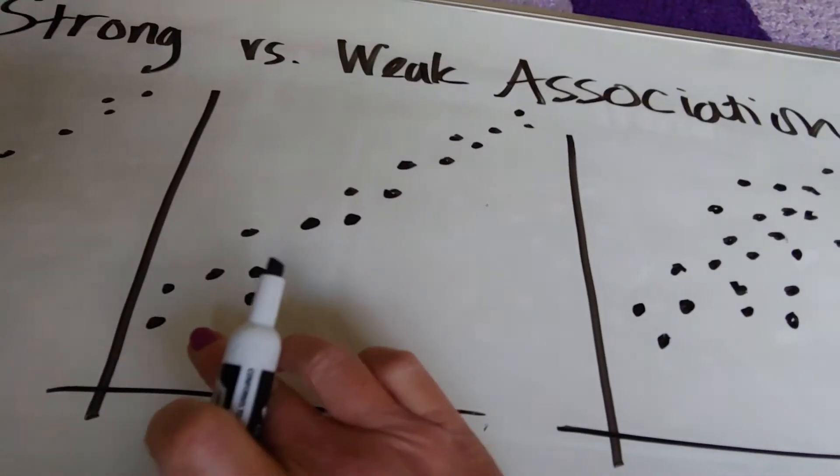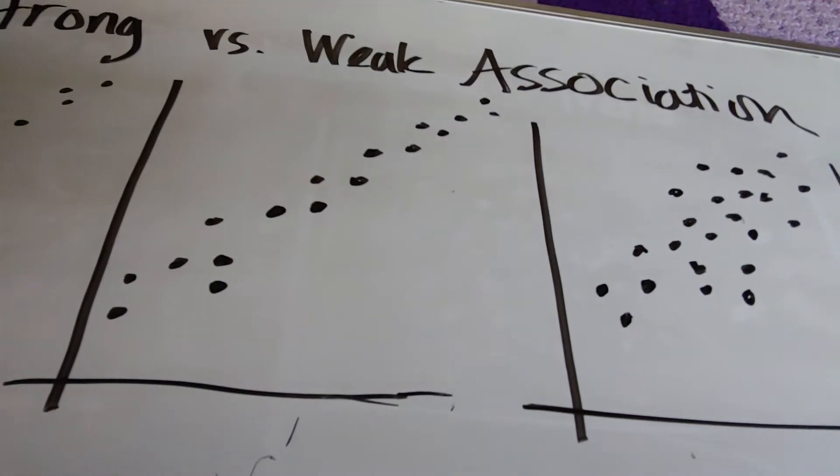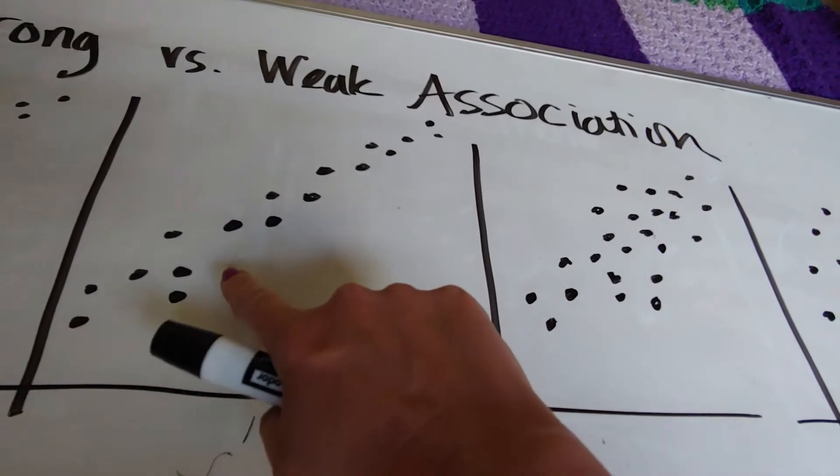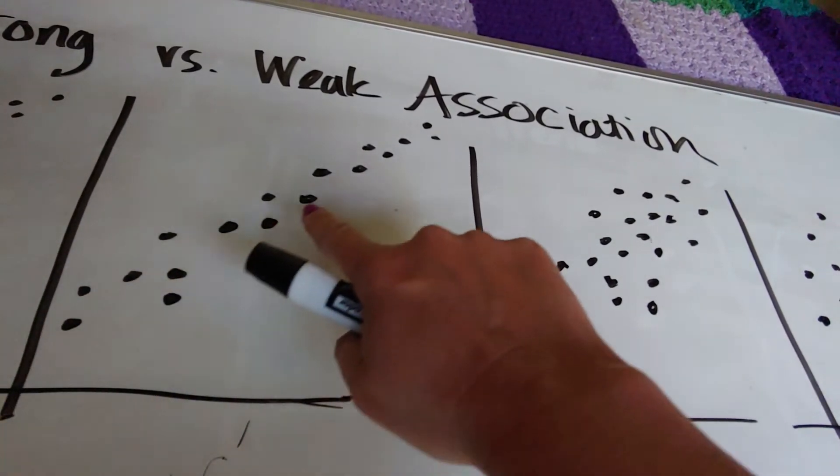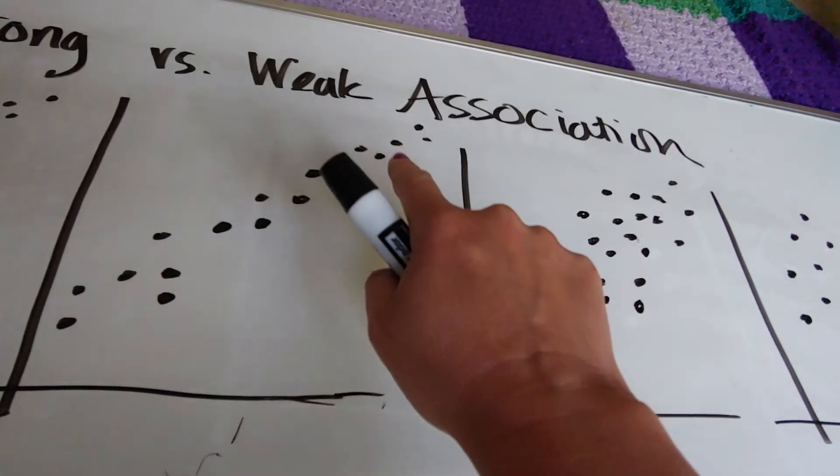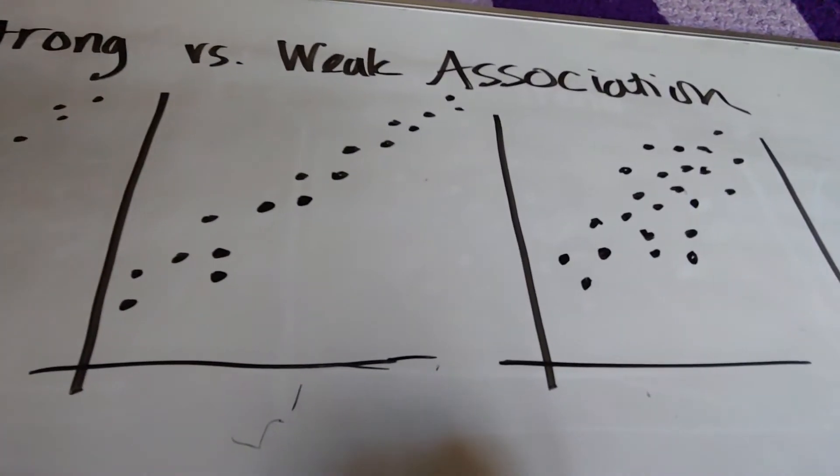This one you can see is a little bit fatter. In fact, in my notes, I even talk about it kind of being like a fat paintbrush. So here what happens is we definitely have a line-like shape, but we've got some scattered points, and those scattered points are definitely going to make it a little bit weaker.